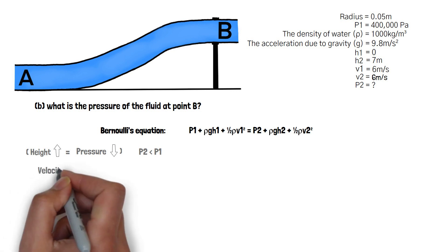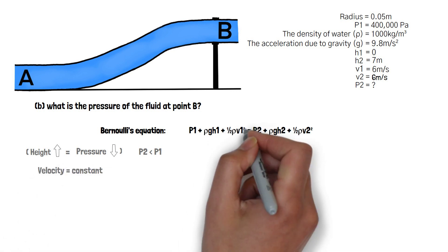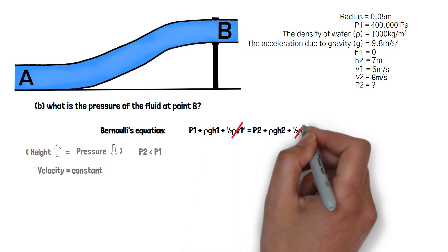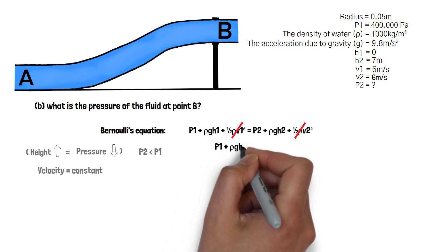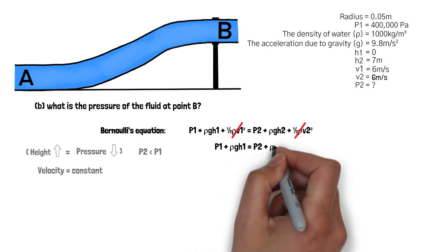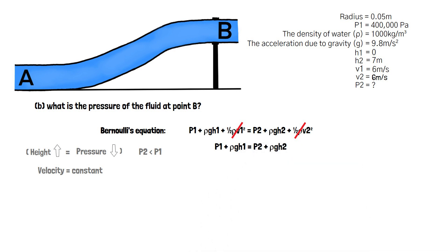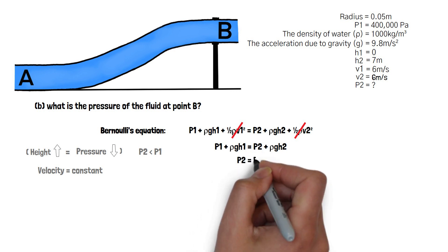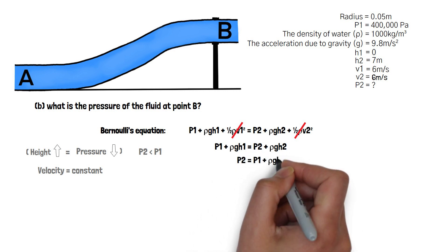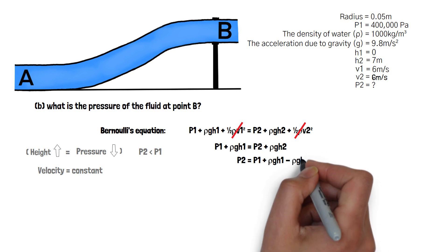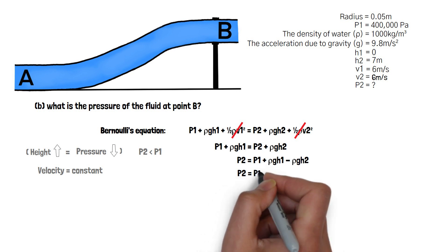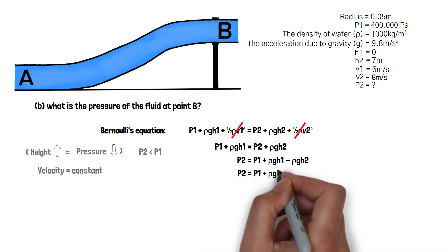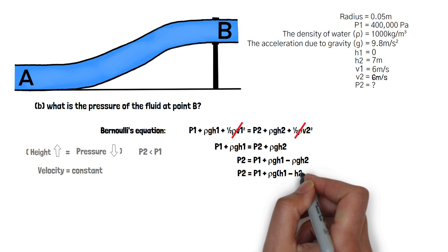As the velocity is constant, this term in the equation does not change and can be cancelled out. The equation then becomes P1 + ρgH1 = P2 + ρgH2. Rearranging this equation for P2 gives us P2 = P1 + ρgH1 - ρgH2, or we can simplify this to factor out ρ and g to become P2 = P1 + ρg(H1 - H2).